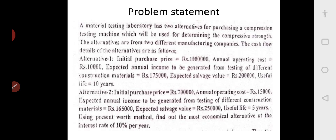Alternative one: the initial purchase price is 10 lakh rupees, the annual operating cost is 10,000 rupees, the expected annual income from testing of different construction materials is 1,75,000 rupees every year, the salvage value is 2 lakh rupees, and the useful life is 10 years. Alternative two is the cheaper one: initial price is 7 lakh rupees, annual operating cost is 15,000 rupees, expected annual income is 1,65,000 rupees, salvage value is 2,50,000 rupees, and useful life is only 5 years. Using present worth method, find the most economical alternative at 10% per year interest.